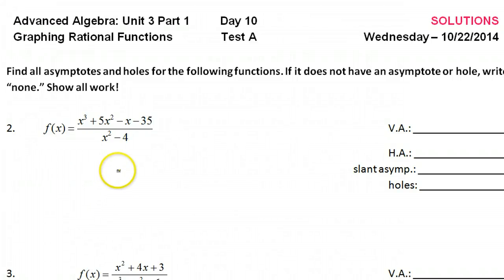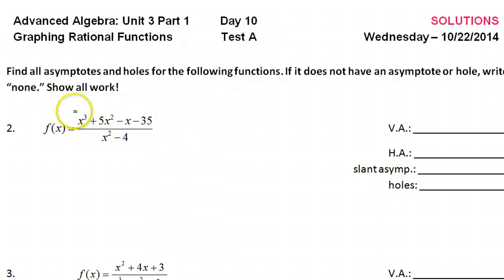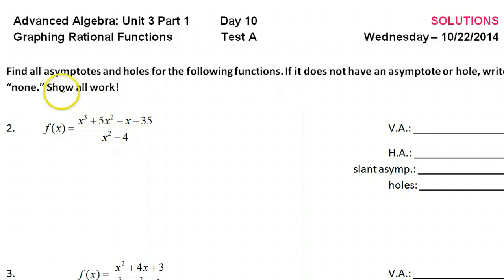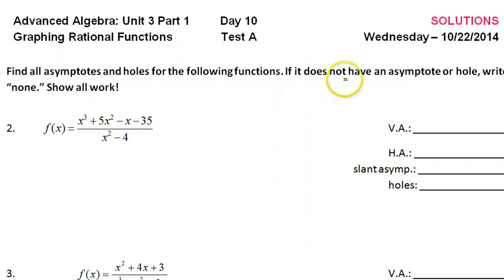This is part two of our lesson on graphing rational functions. This was a test and we are practicing all this good information. Picking up with number two, we're supposed to find all the asymptotes and holes for this function. If it doesn't have an asymptote or a hole, just write none.